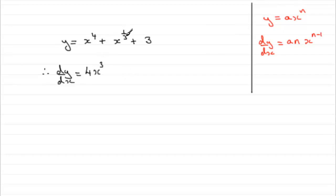For this term, n is the third. We've got a 1 at the front here, so it's going to be again 1 times a third, which is going to be plus a third. And then just reduce the power by 1, so if we take 1 off a third, we end up with minus two thirds.